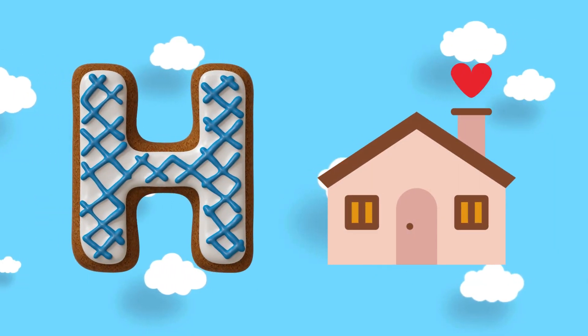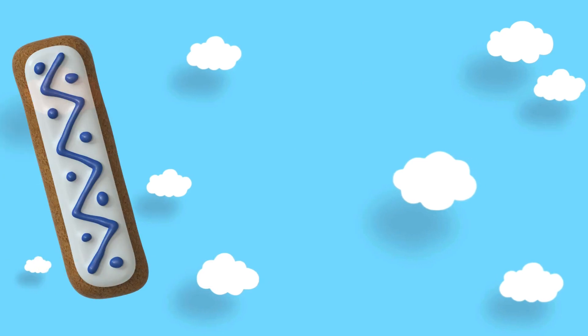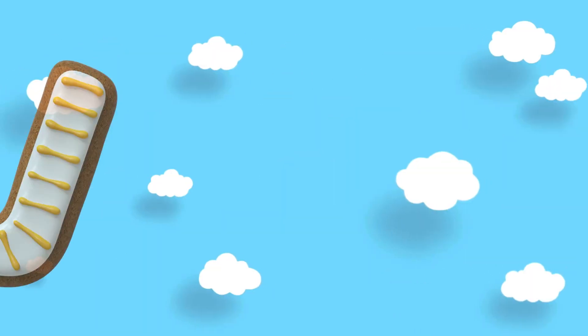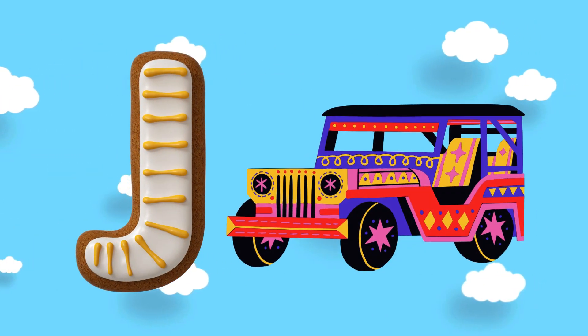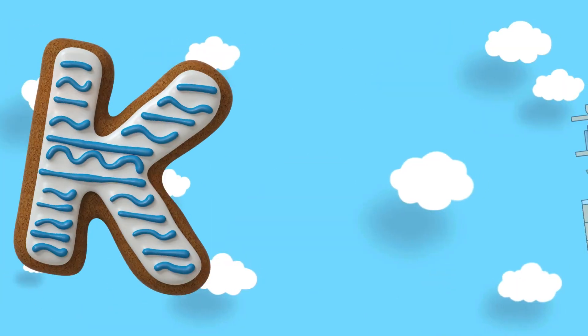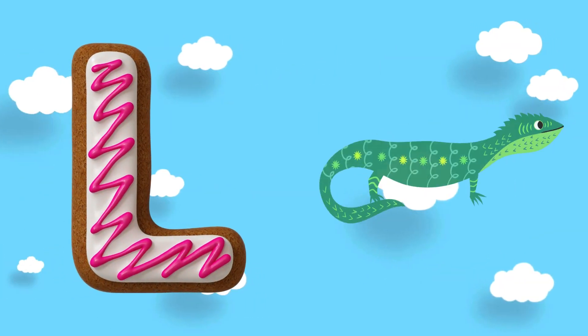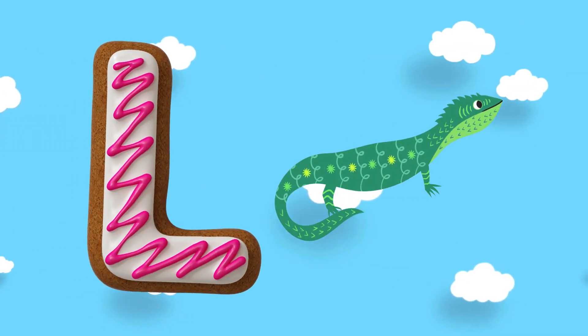H is for helmet, I is for insect, J is for cheek, K is for kitchen, L is for lizard.